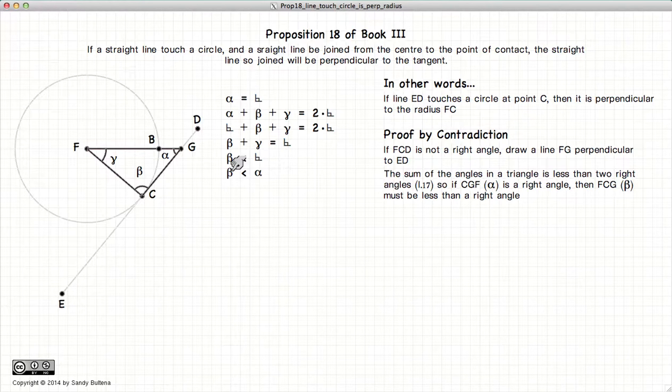Now according to Proposition 17 of Book 1, the sum of the three angles in a triangle is equal to two right angles, or 180 degrees. We've already stated that alpha is a right angle...